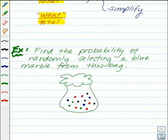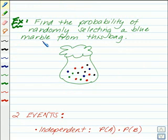Let's look at an example. Find the probability of randomly selecting a blue marble from this bag. So, first we have to count how many blue marbles we have, because we need to know how many ways we can be successful. There's 1, 2, 3 blue marbles.